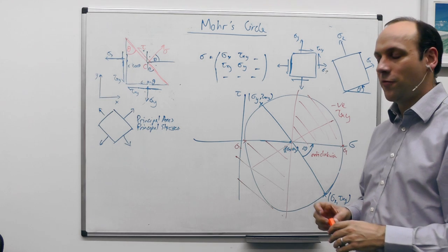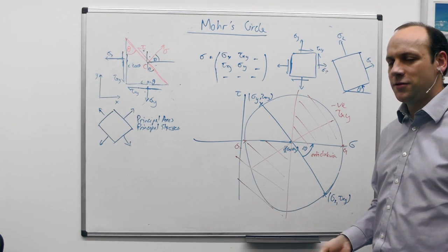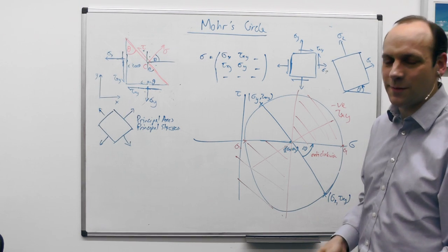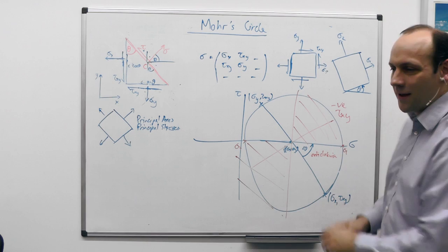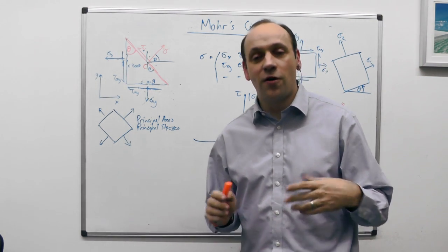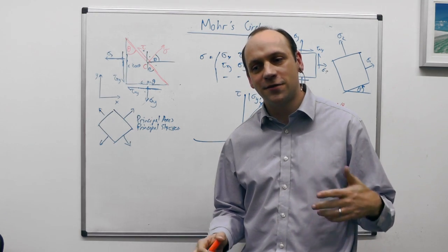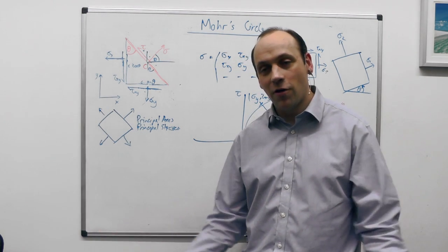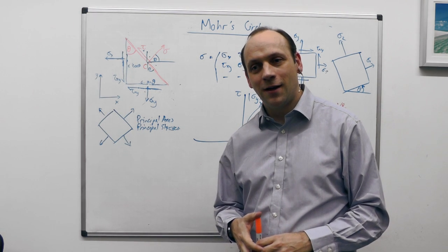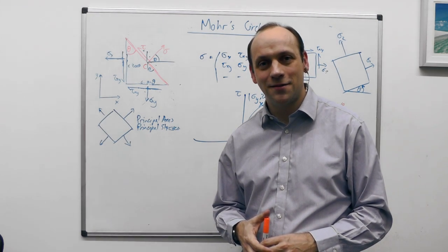By and large we don't worry too much about negative shear stresses — it's only a minus sign. That's Mohr's Circle. Probably the best way to understand it is to do some problems, which is what we'll do next: we'll start looking at how to solve stresses in bodies and bring all this together to solve a few 2D stress problems in the third lecture.